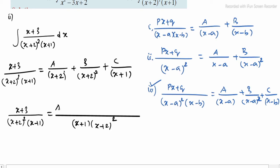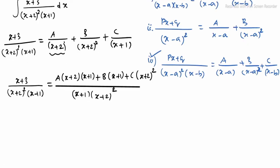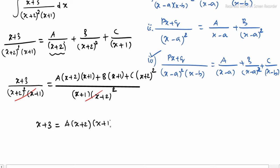Comparing both sides: for A, multiply by (x + 2)(x + 1); for B, multiply by (x + 1); for C, multiply by (x + 2)². After taking LCM and cancelling denominators: x + 3 = A(x + 2)(x + 1) + B(x + 1) + C(x + 2)². Now find A, B, and C.